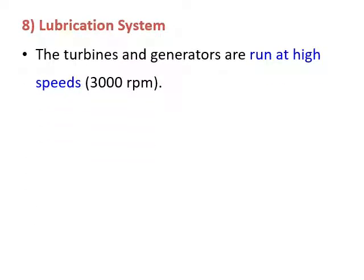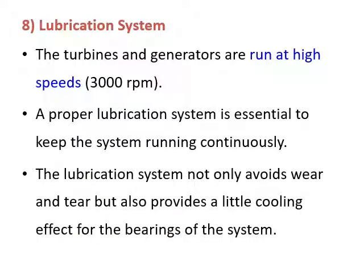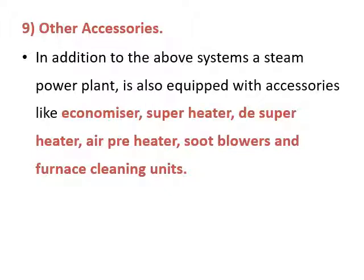The lubrication system is required because all components are moving at very high speed and free lubrication between the two moving parts is essential for continuous operation. The lubrication system not only reduces wear and tear but also provides a cooling effect between the bearing systems. Other accessories to increase efficiency include the economizer, superheater, desuperheater, and air preheater — all of which will be studied in detail in the next session.